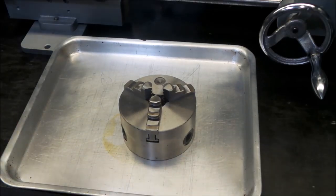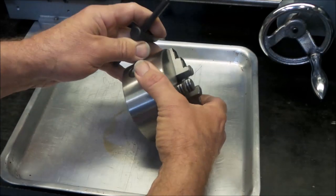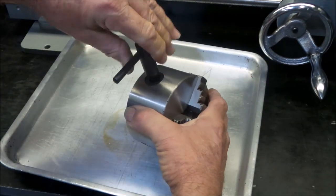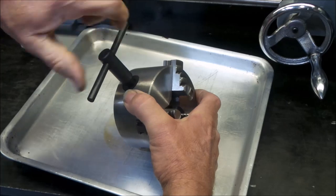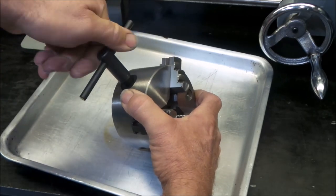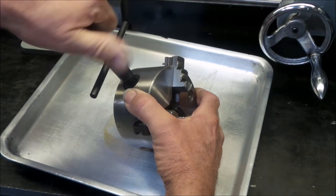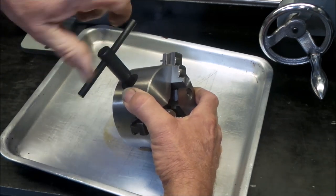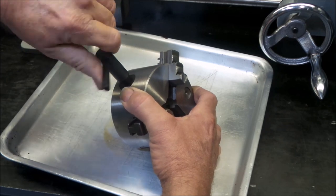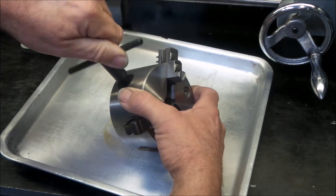We might start disassembling this chuck. She's pretty bloody horrible. Let's get these jaws out first. I don't know if you can hear it on the audio but it's quite gritty and notchy. Turning this key here to get the jaws out.